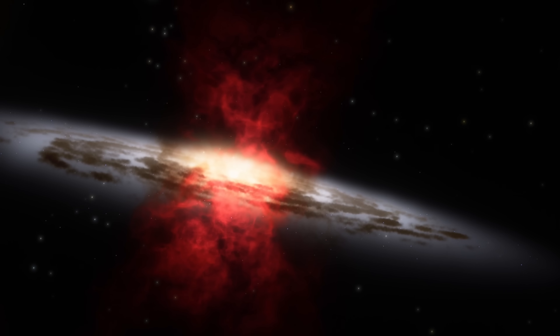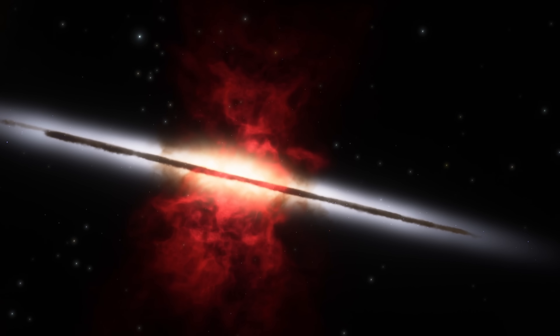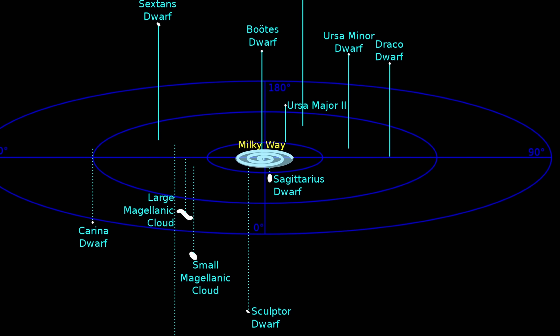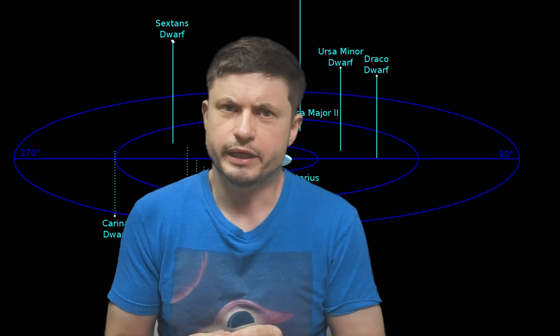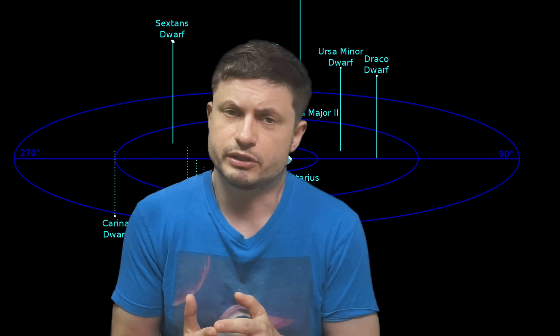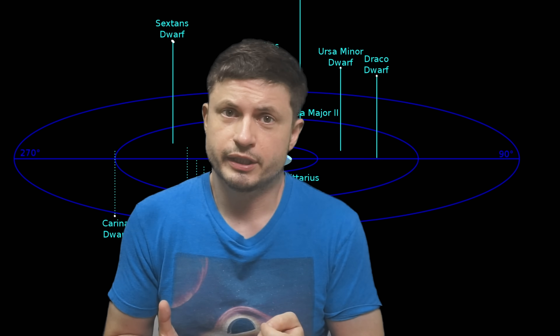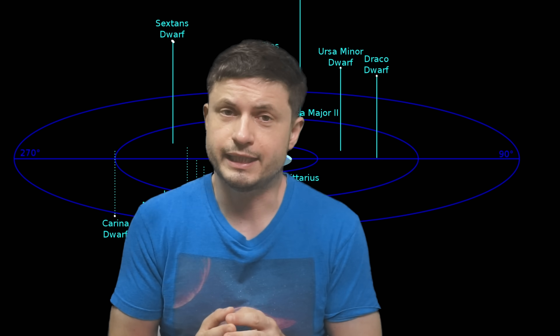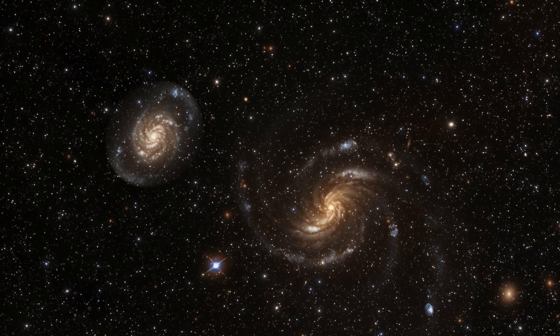Hello, this is Anton and today we're going to discuss some of the new discoveries in regards to our own galaxy, the Milky Way, and a somewhat old mystery. The mystery that for the past few decades was referred to as the missing satellite problem — the problem of missing satellites, but in this case satellites orbiting galaxies. And so let's discuss some of these new studies and discoveries that basically create a bit of a different problem.